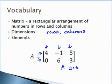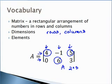The elements are each of the separate numbers. For example, one element is in row one, column one. The six is in row two, column two. The five is in row one, column three.